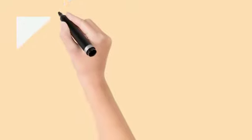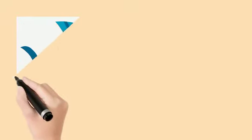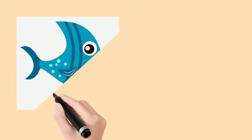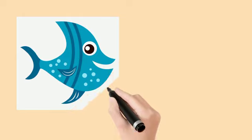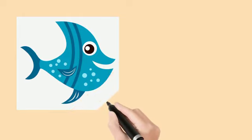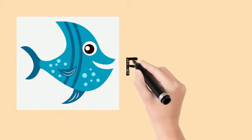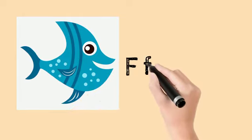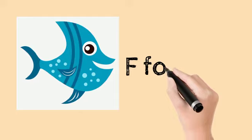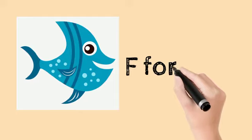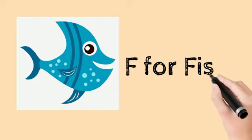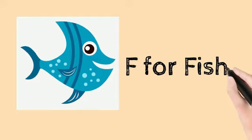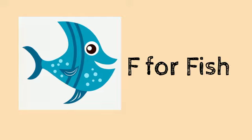First see the picture. What do you see in this picture? Yes, it is a fish. What is the spelling of fish? F for fish. F-I-S-H, fish.